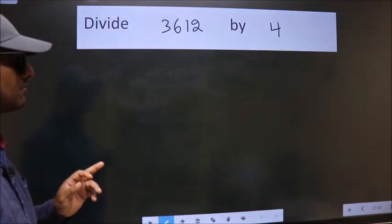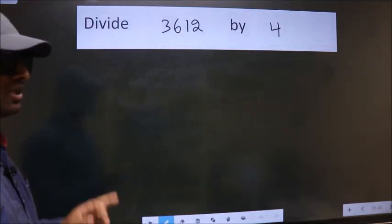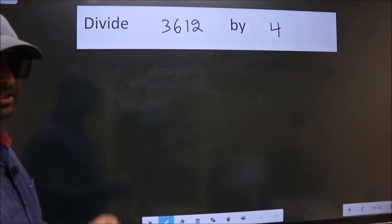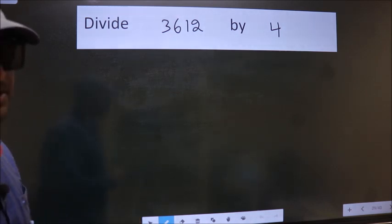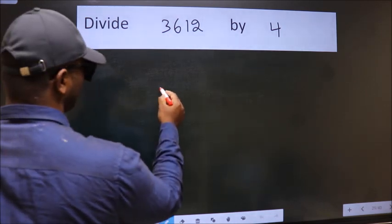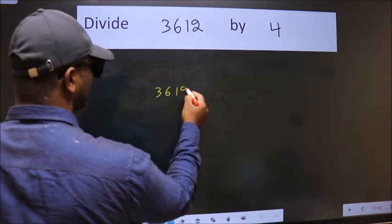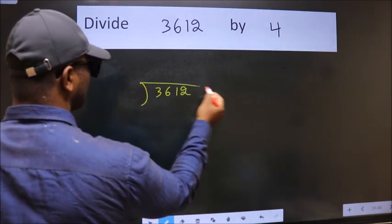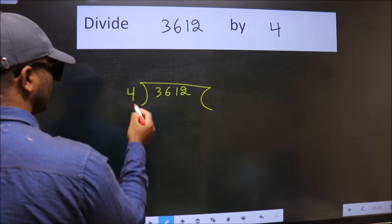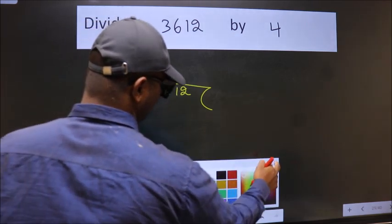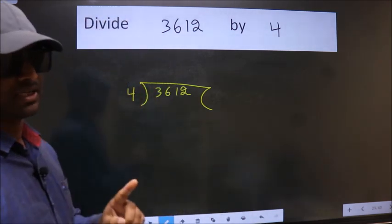Divide 3612 by 4. To do this division we should frame it in this way. 3612 here. 4 here. This is your step 1.